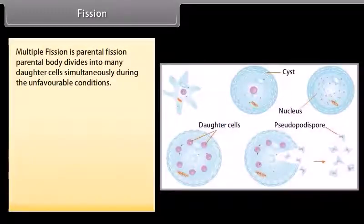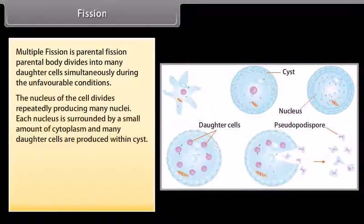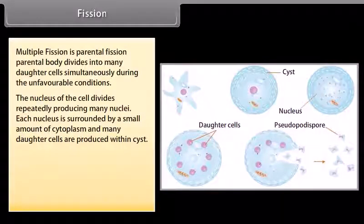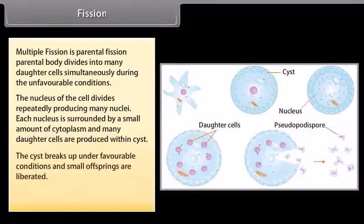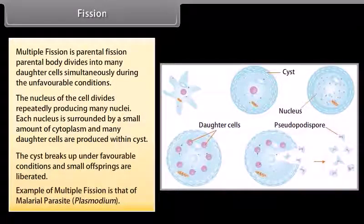Multiple fission is when the parental body divides into many daughter cells simultaneously during unfavorable conditions. The nucleus of the cell divides repeatedly, producing many nuclei. Each nucleus is surrounded by a small amount of cytoplasm, and many daughter cells are produced within a cyst. The cyst breaks up under favorable conditions and small offspring are liberated. An example of multiple fission is the malaria parasite Plasmodium.